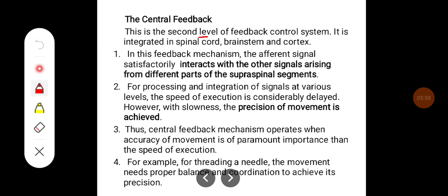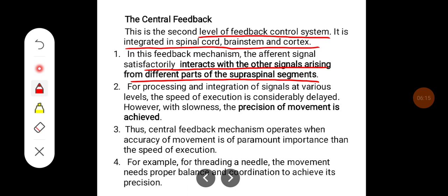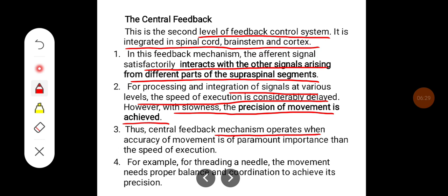The central feedback is the second level of the feedback control system. It is integrated in the spinal cord, brainstem, and cortex. In this mechanism, afferent signals interact with signals arising from different parts of the supraspinal segments for processing and integration at various levels. The speed of execution is considerably delayed; however, with slowness, precision of movement is achieved. Central feedback operates when accuracy of movement is of paramount importance over speed — for example, threading a needle requires proper balance and coordination to achieve precision.